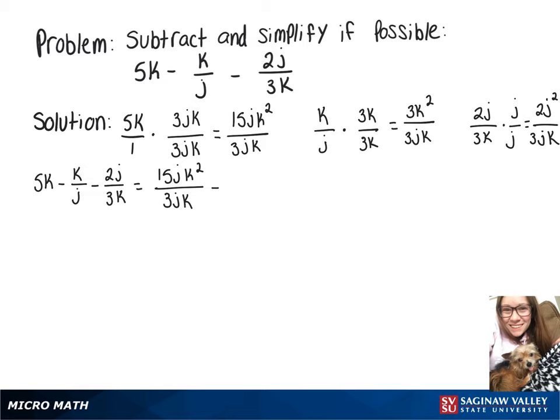Minus 3k squared over 3jk, minus 2j squared over 3jk.